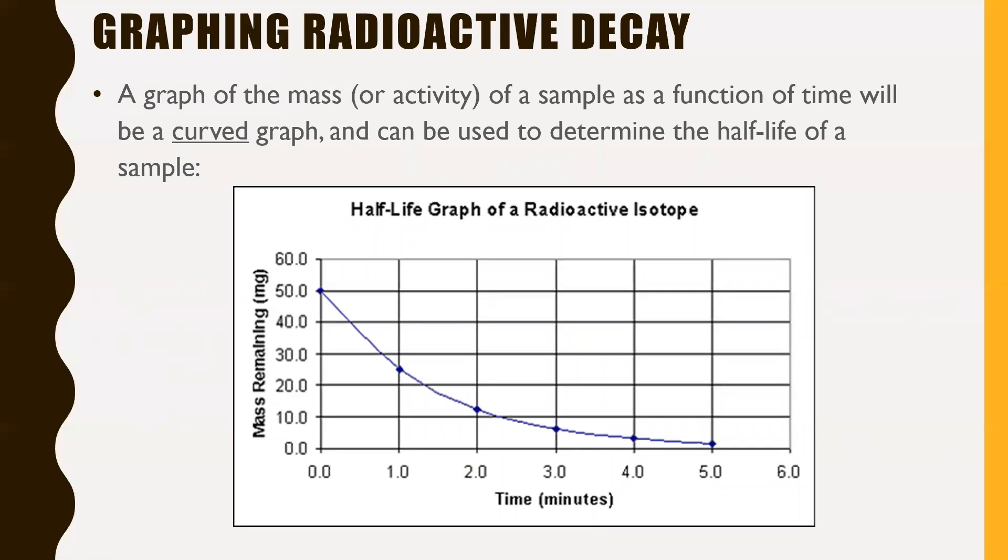Graphing radioactive decay, we've already seen that on that example I gave earlier. The graph of the mass or activity of a sample as a function of time will be a curved graph and be used to determine the half-life of a sample. If we looked at this example, notice we have time along our x-axis and our mass remaining in milligrams along our y-axis. Initially, at a time of zero, we had 50 milligrams. Then notice at this point right here, we had 25 milligrams. That's half of what we started with after 1.0 minutes. In other words, our half-life T₁/₂ is literally one minute on this one.